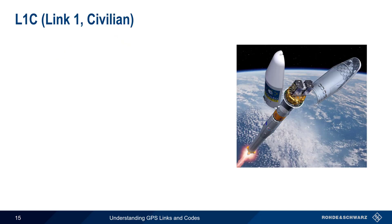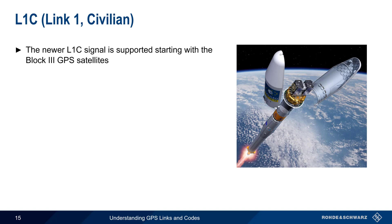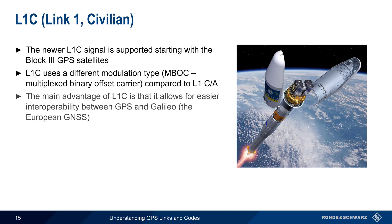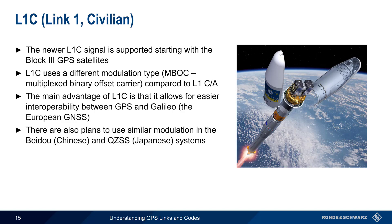In terms of open or non-encrypted codes, there's also a new civilian code on L1, named L1C. This code is supported with the Block III, or latest generation, of GPS satellites. The biggest difference between CA code and L1C is that L1C uses a different modulation type. And the reason this modulation was chosen is that it allows easier interoperability between GPS and Galileo, the European version of GPS. Long term, there are also plans to use similar modulation in other global navigation systems, like the Chinese Beidou and the Japanese QZSS systems.